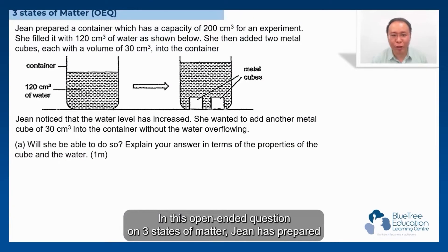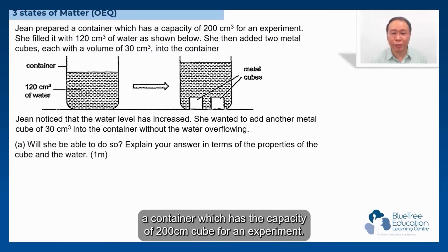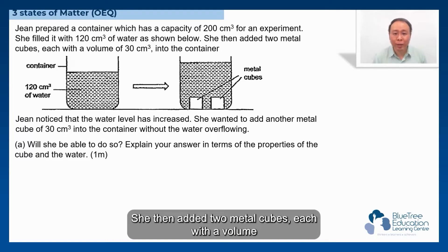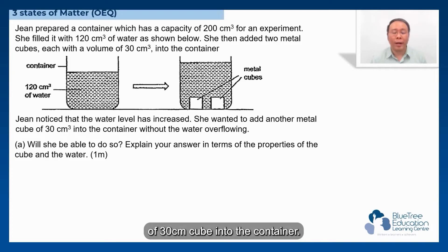In this open-ended question on the three states of matter, Jean has prepared a container which has a capacity of 200 cm cubed for an experiment. She filled it with 120 cm cubed of water as shown below. She then added two metal cubes, each with a volume of 30 cm cubed, into the container.